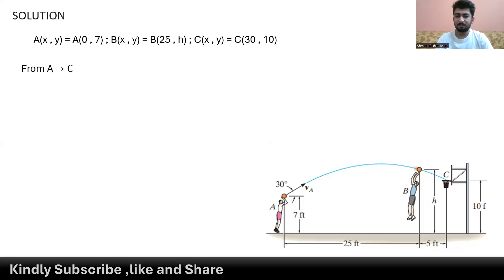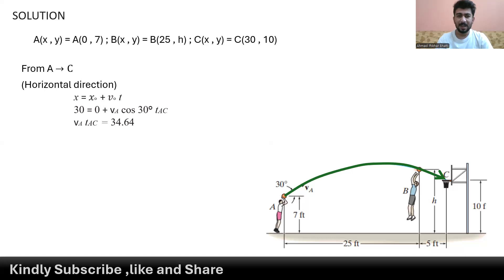We let the ball travel from point A to point C to first find its initial velocity, using equations of motion along the horizontal and vertical directions. In the horizontal direction, x equals x-naught plus v-naught times t. Our initial position is 0 and final position is 30 feet at point C. Along the horizontal direction we have vx, so vx equals va cos 30 degrees.